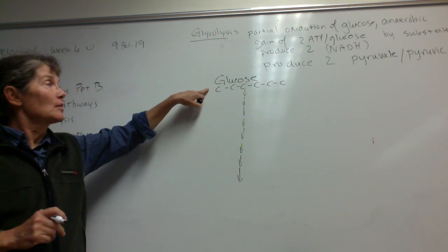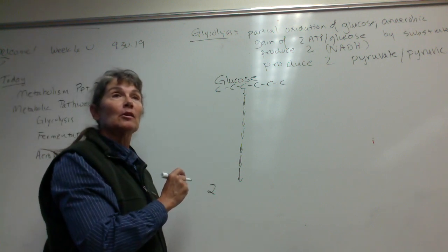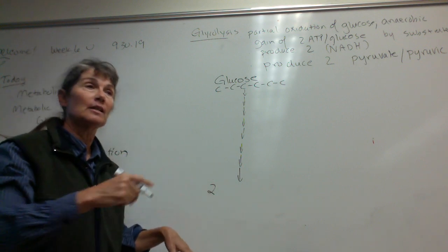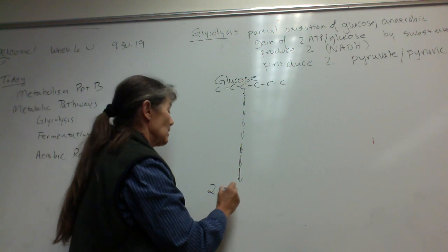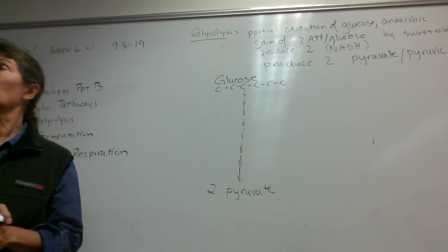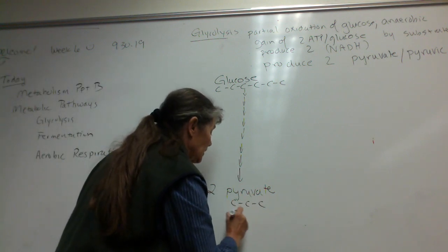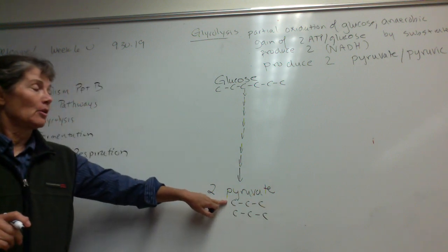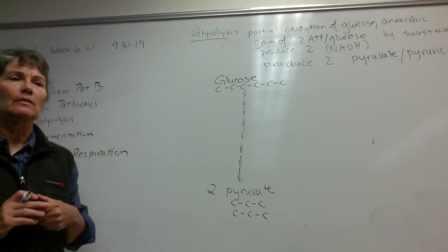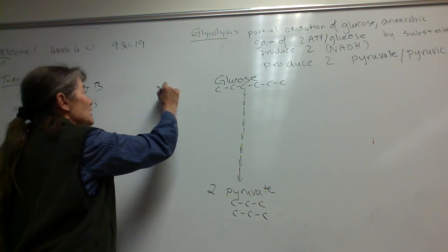Let's just follow what happens to our glucose skeleton. We start with 6-carbon glucose and end up with 2 what? It gets split in 2. We're going to end up with 2 pyruvate, each made up of 3 carbons. We always count our carbons to make sure we don't lose any. For this process to occur, let's see what else has to go in.